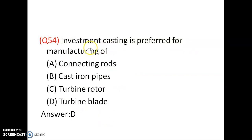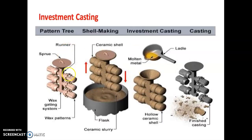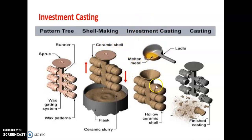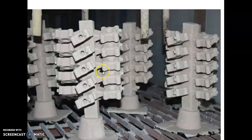Investment casting is preferred for manufacturing turbine blades — option D is correct. In investment casting, wax patterns are used and then melted, which is why it is also called the lost wax process. This method is used for making very intricate and complex shapes.